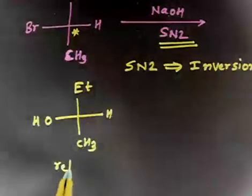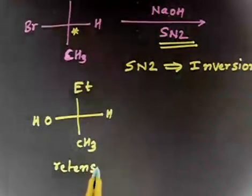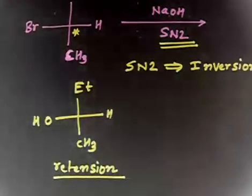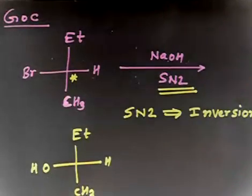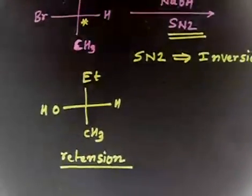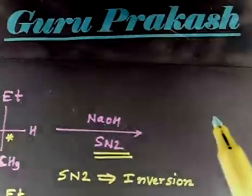So, this is retention because I have not changed the configuration of carbon. So, I am simply removing bromine and adding OH. So, this is retention of configuration. But in this case, I have to inverse the configuration.